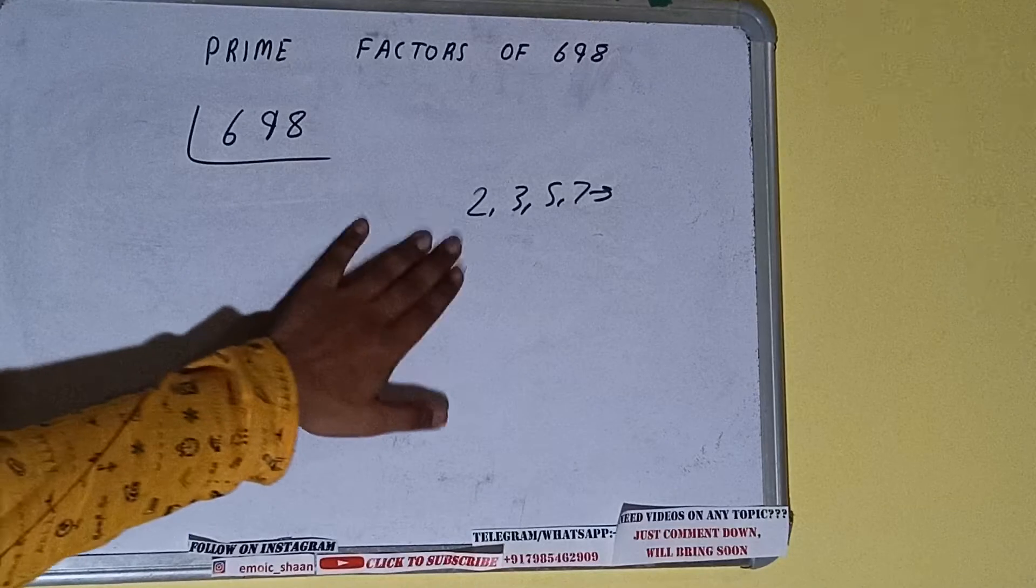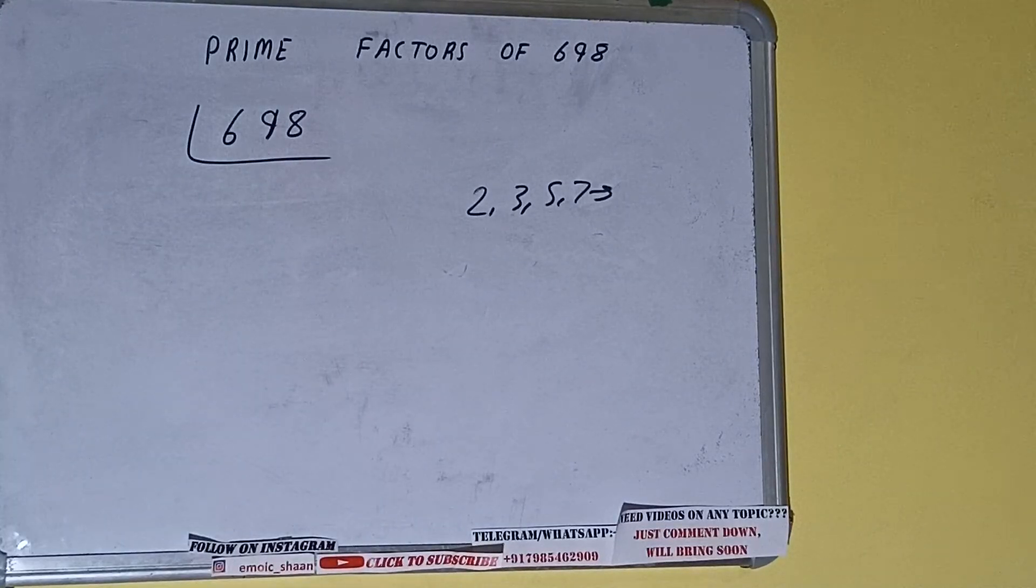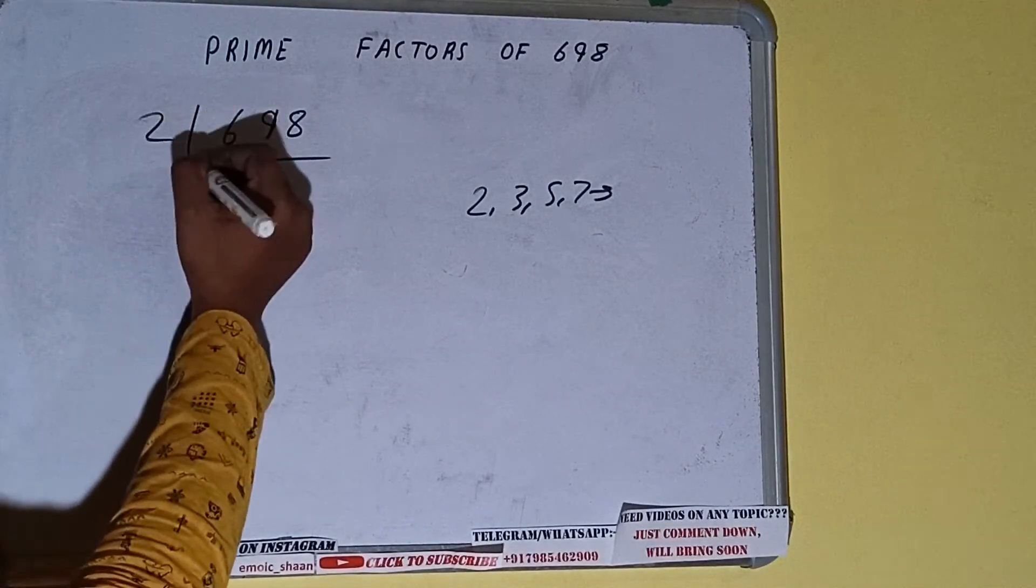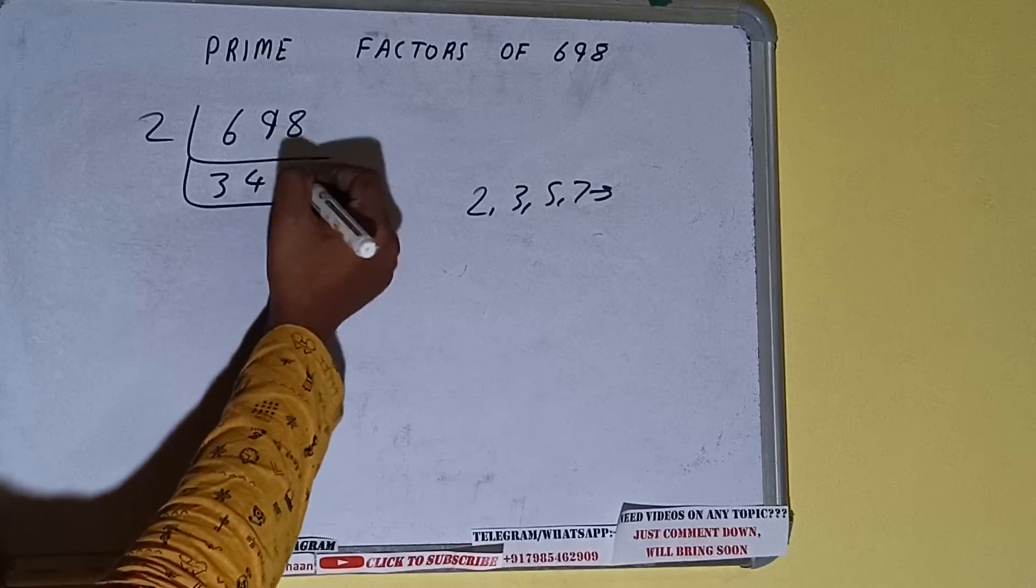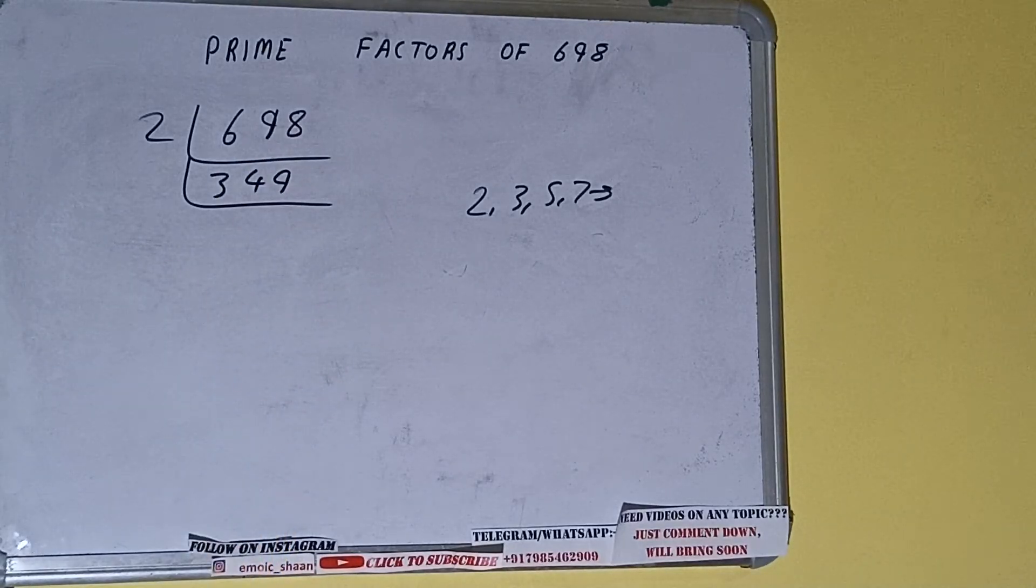That is 2. Is the number 698 divisible by 2? Yes it is, because the number is even, and we'll be having 349. Is 349 divisible by 2? The answer is no because the number is odd. Now, the number 349 is also a prime number, so it is only divisible by itself.